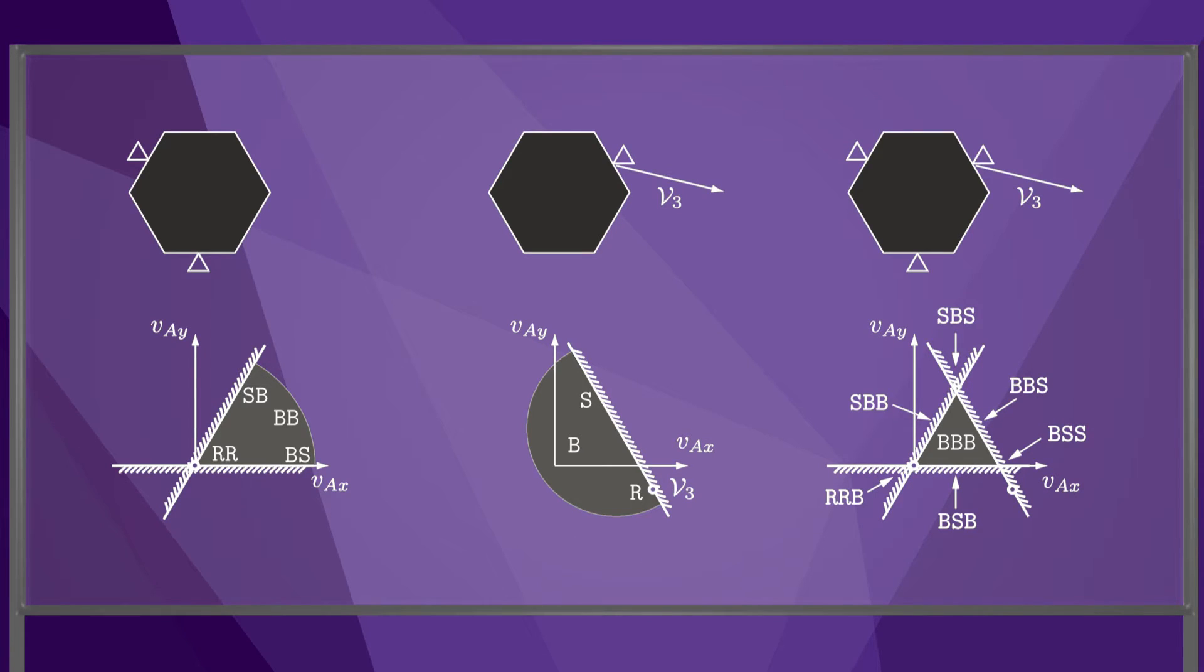Any twist strictly inside the triangle results in breaking contact at all contacts. There are also six other possible contact modes, depending on the hexagon's twist.